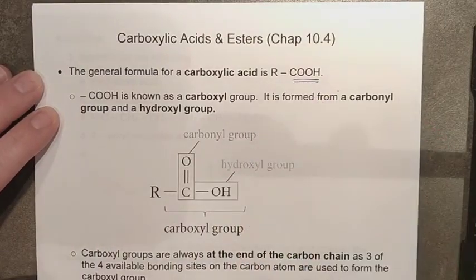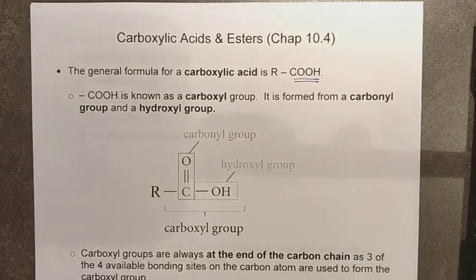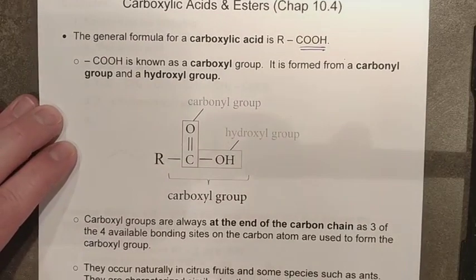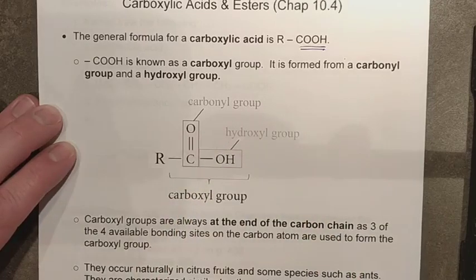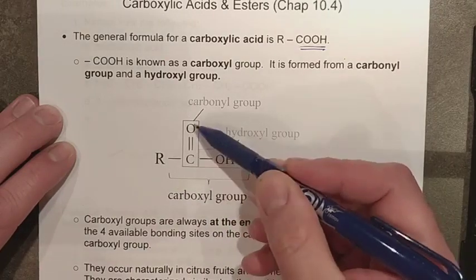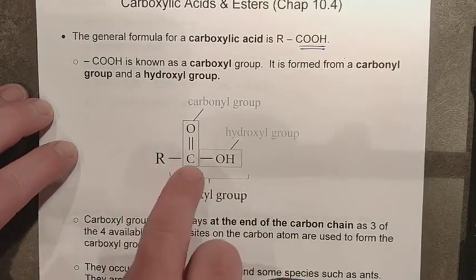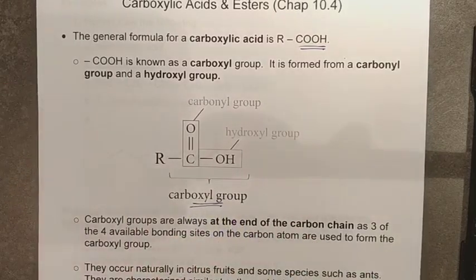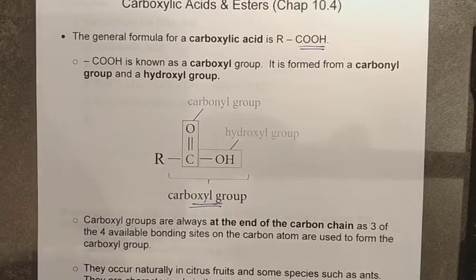Carboxylic acids have a unique combination attached to a final carbon: two oxygens, one being double bonded. This is actually two different functional groups combined to make a brand new one called the carboxyl group. You have the familiar hydroxyl group — which on its own gives us alcohols — and the carbonyl group, which has a double bonded oxygen. When both are attached to a single carbon, we call it a carboxyl group, and organic molecules with this arrangement are our organic acids.